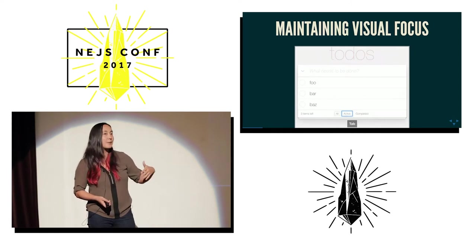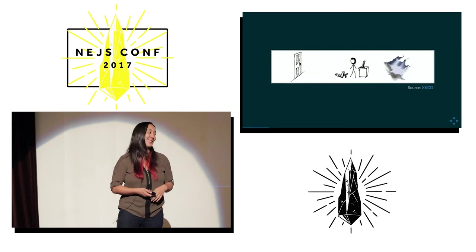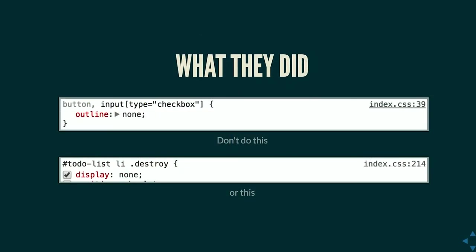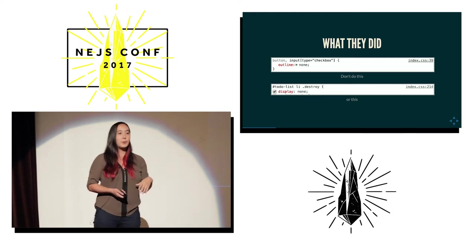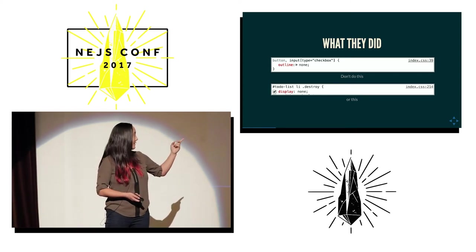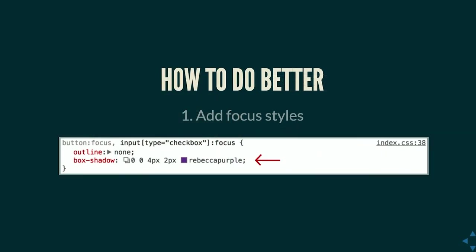You can create new todos and sort of check them if you guess where you are, but you can't edit or delete them, and you have no idea where you are. The color contrast is awful too. Looking at the developer tools, they put 'outline: none' on the button and input type checkbox — a perfect example of how the web is inherently accessible and we make it inaccessible by the things we do. They also put 'display: none' on the delete button — both screen readers and keyboards pay attention to CSS. Display none or visibility hidden removes an element from the focus order and from the screen reader tree.